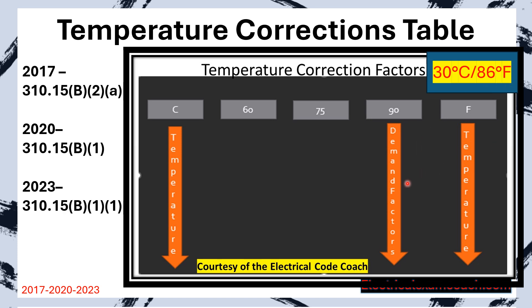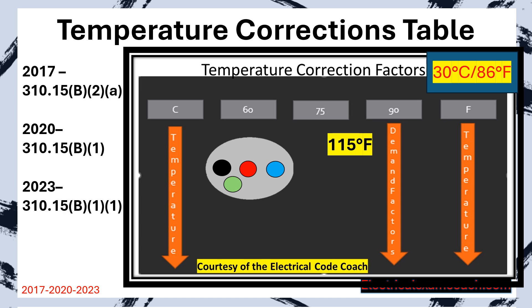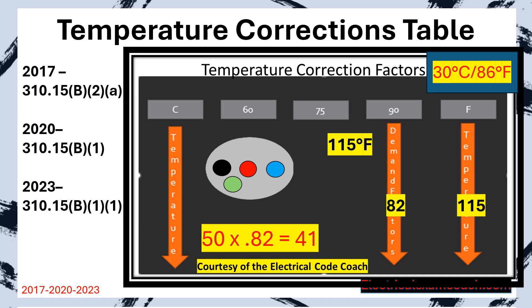Let me give you an example. Imagine we have a circuit with black, red, and blue conductors plus an equipment grounding conductor, in an ambient temperature of 115 degrees Fahrenheit. We start on the right-hand side, find 115 degrees, then come over to the 90 degrees C column and find our correction factor — it's just another demand factor. If a wire was 50 amps before, and the correction factor is 0.82, we take 50 times 0.82 and get a new allowable ampacity of 41 amps.